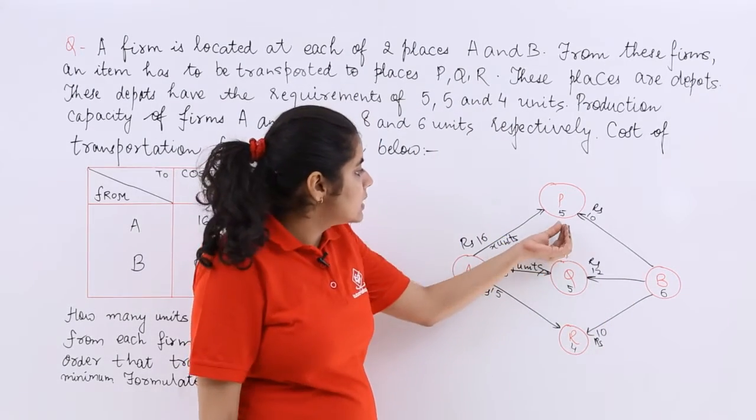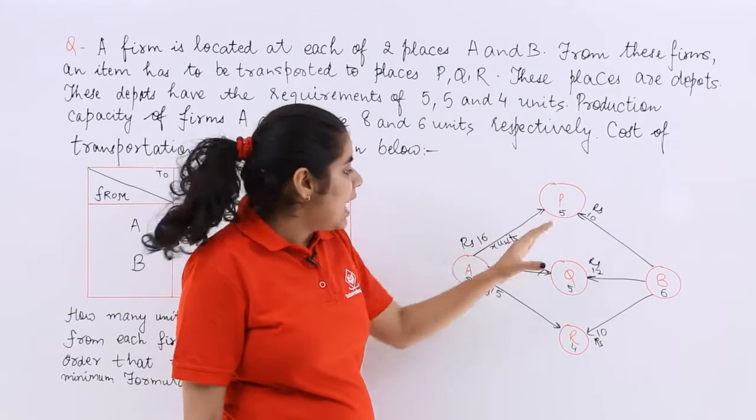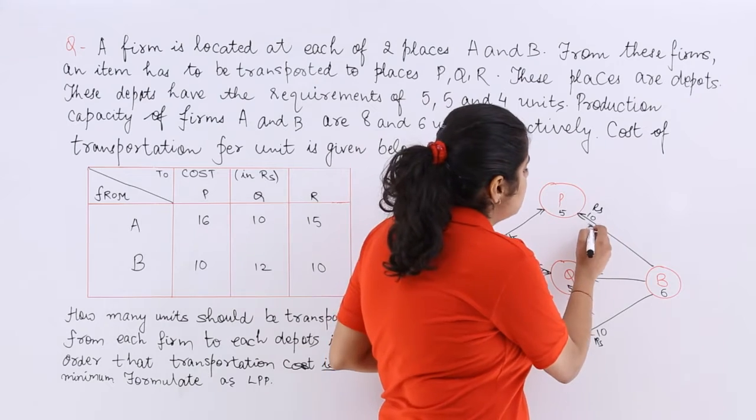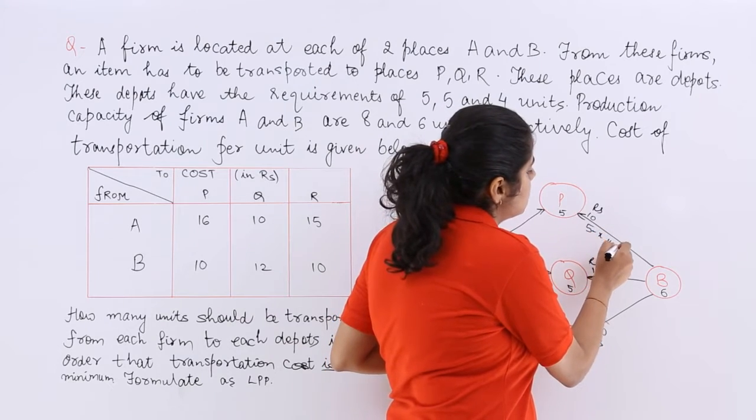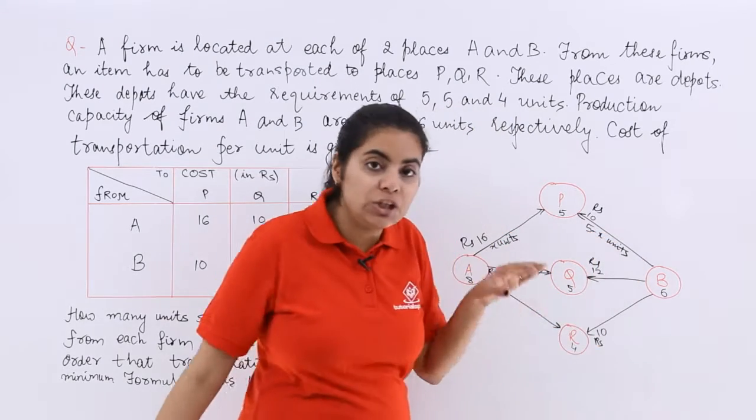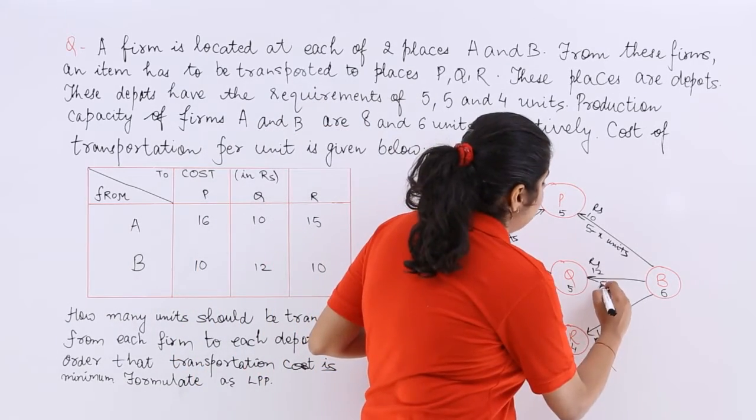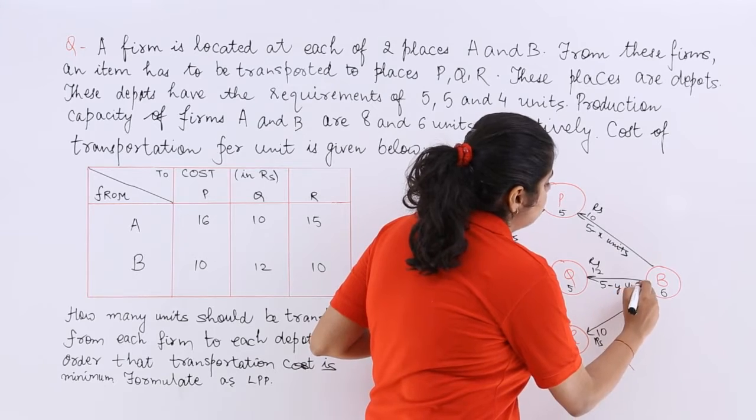Now this is 5 units which is the requirement. I know that X units are being transferred over here. So remaining requirement is only 5-X units. Similarly Q has the requirement of 5 units. Y units are already being transferred. So the left out requirement is 5-Y units.